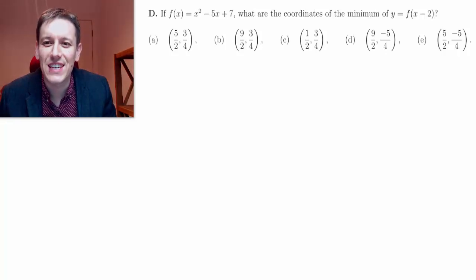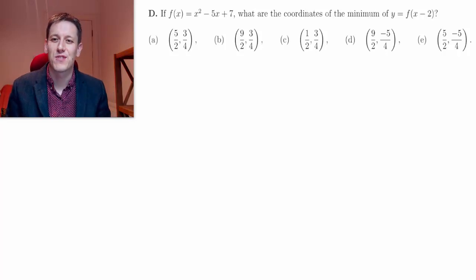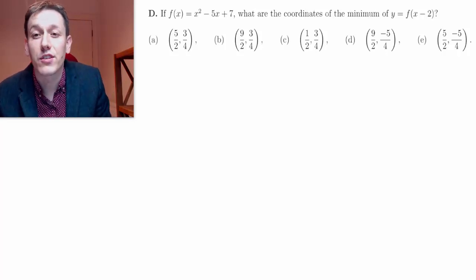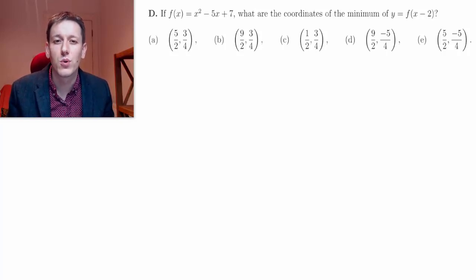Hi, here's question D from the short answer questions from the Oxford Maths Admissions Test from 2018. I've got a quadratic given here, f of x equals x squared minus 5x plus 7. I want to know what the coordinates of the minimum of y equals f of x minus 2 are.